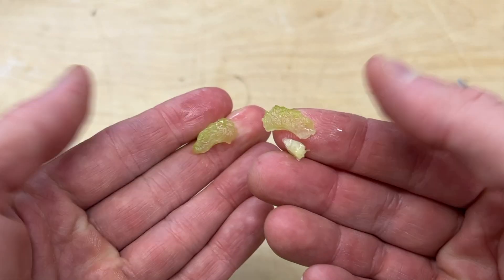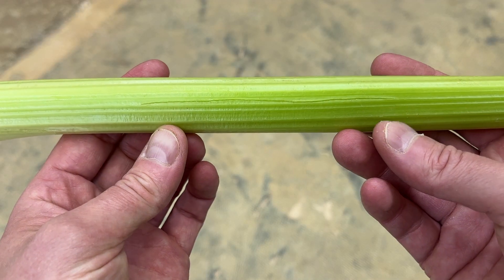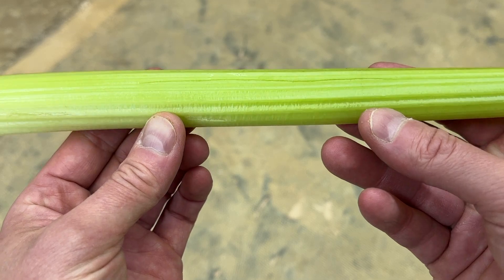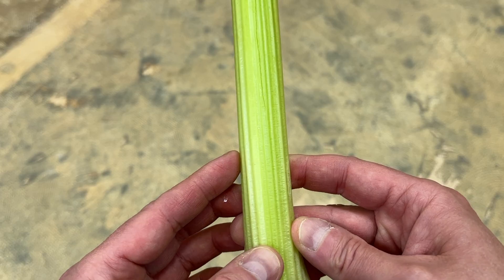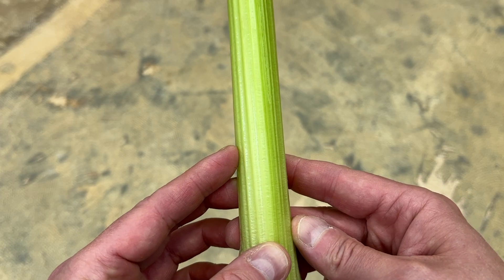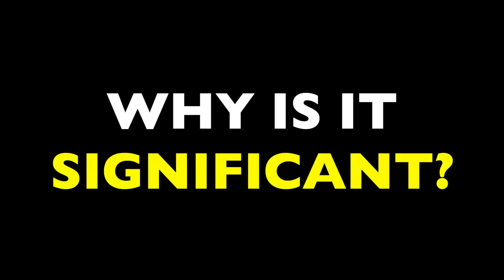Celery is much the same. It contains way more water overall, but it too has long tube-like cells — xylem and phloem — that also give it an appearance of linear grain. So celery is just a little tree. And that's really cool, but why is it significant?